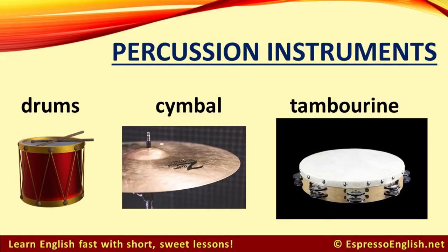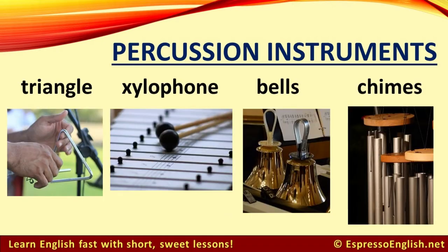There are three basic types of musical instruments. Percussion instruments are the ones you hit. For example: drums, cymbal, tambourine, triangle, xylophone, bells, chimes.